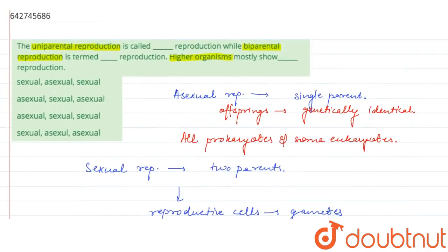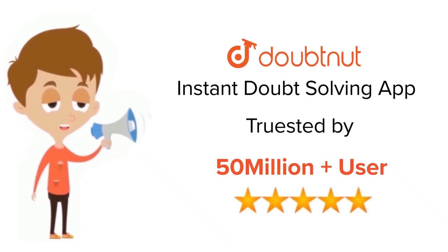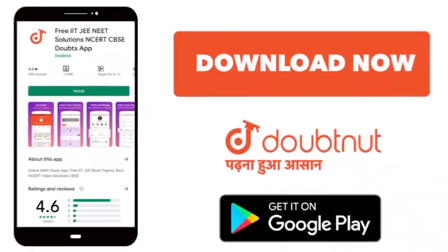So if we look at the options that are given to us, the uniparental reproduction is called as the asexual one, and while the biparental reproduction is termed as the sexual one, and the higher organisms mostly show the sexual type of reproduction. So the correct answer would be the third option.